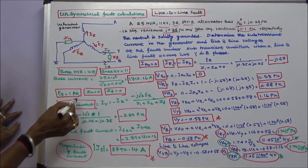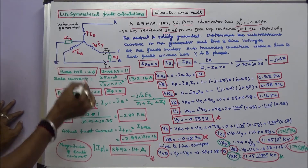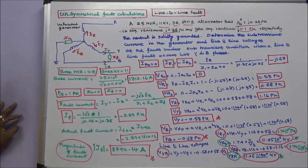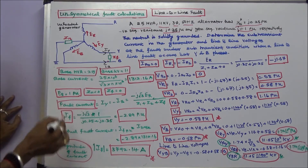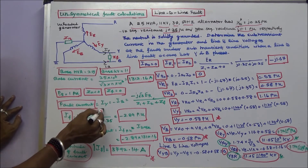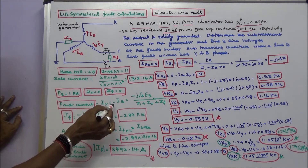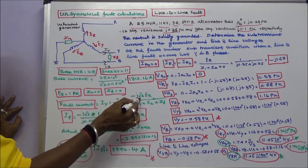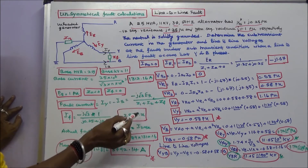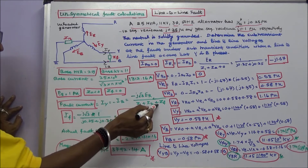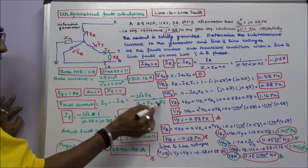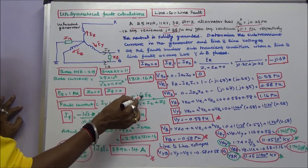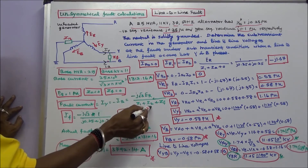Here ER is equal to 1 per unit, ZN is equal to 0, ZF is equal to 0. We know that fault current IY equals minus IB, equal to minus j into root 3 into ER divided by Z1 plus Z2 plus ZF. Here ZF is 0, therefore it becomes minus j into root 3 into ER divided by Z1 plus Z2.